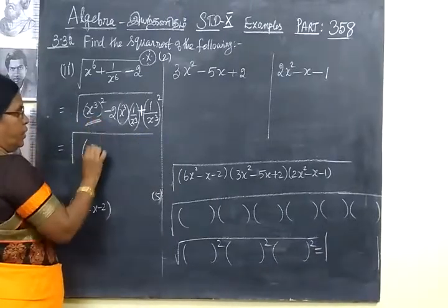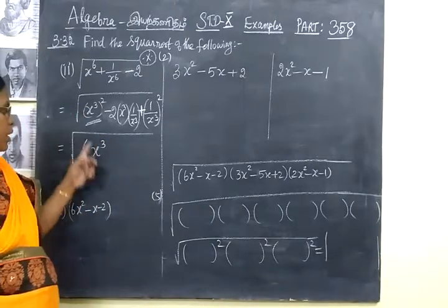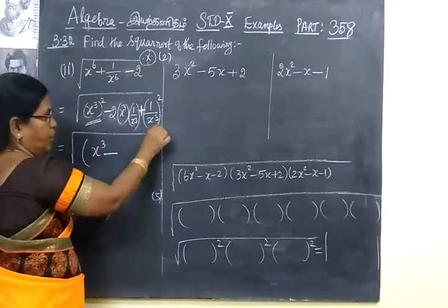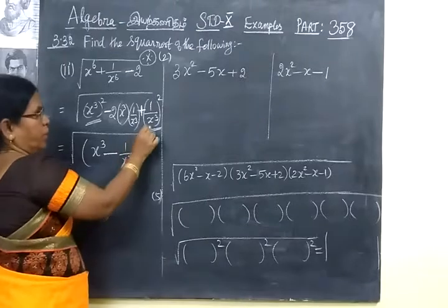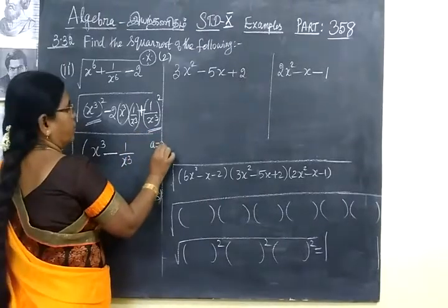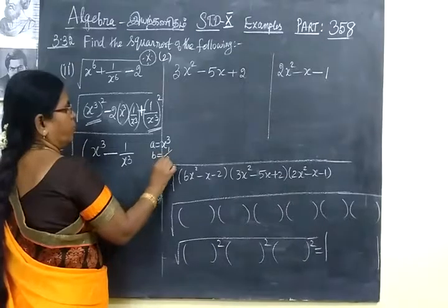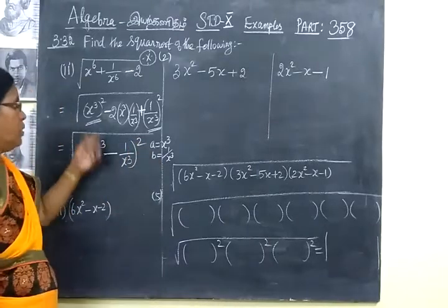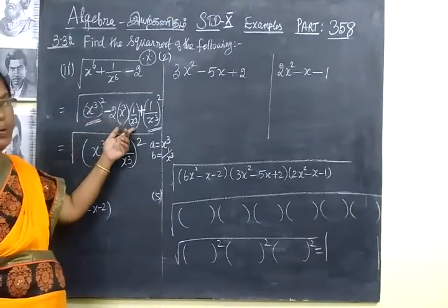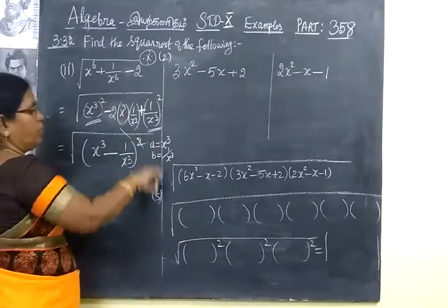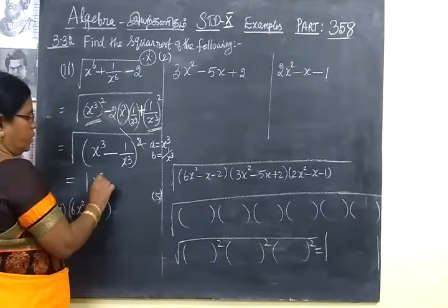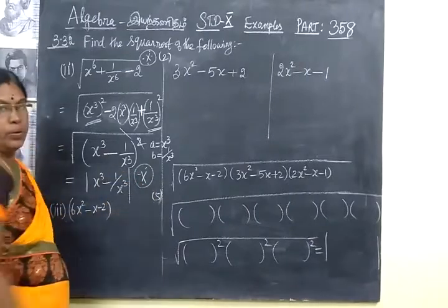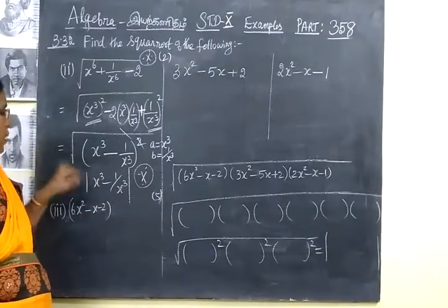So in the place of a: x cube. Since it is minus you are writing minus. In the place of b: 1 by x cube. Here a equals x cube, then b equals 1 by x cube. So x cube minus 1 by x cube whole square. This is of the form a square minus 2ab plus b square. Now root and square cancel, so we get modulus of x cube minus 1 by x cube. This is a very very important question, many times coming in the 2-mark question.